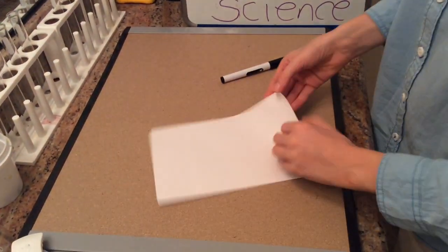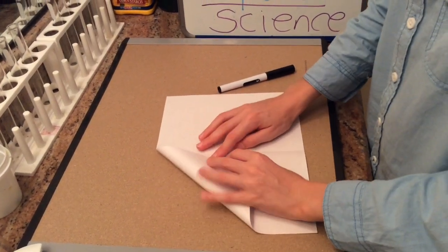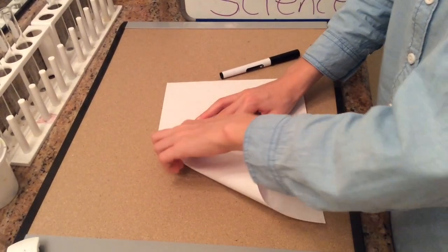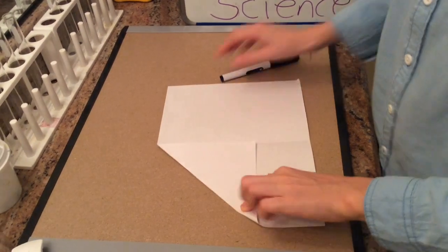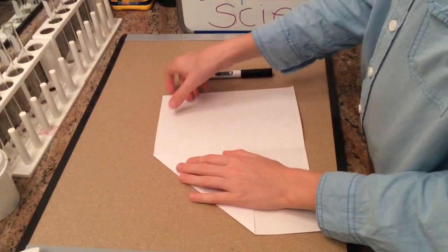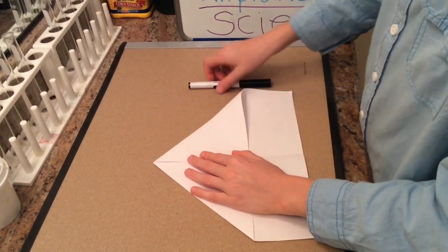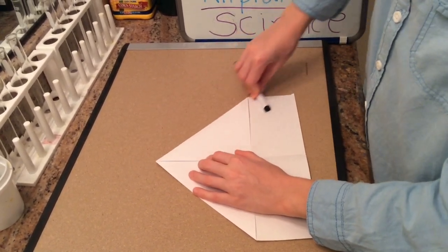Now we will unfold and fold this corner down to our center line and crease. And with this corner, we will do the same. Just fold down and crease.